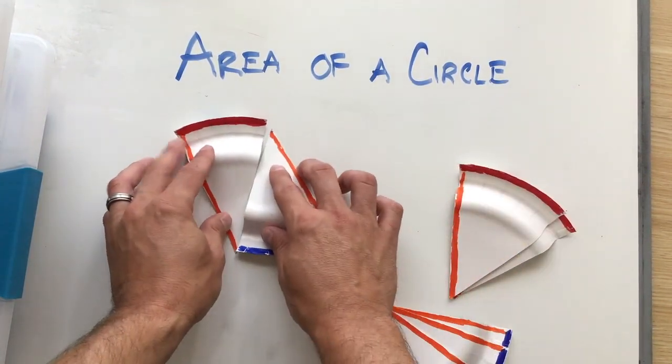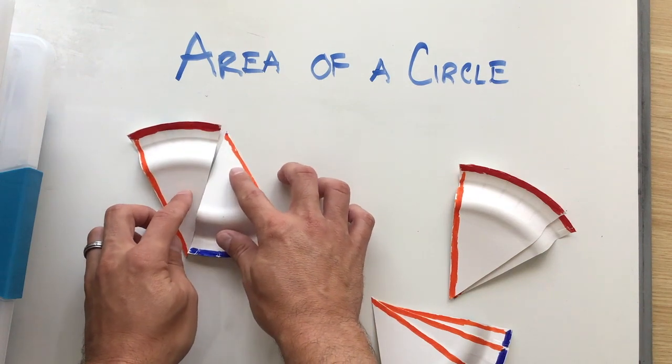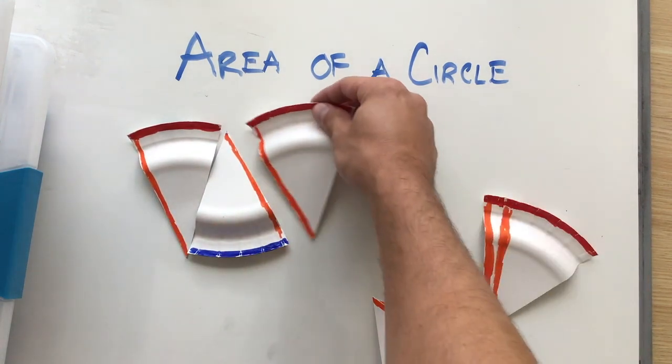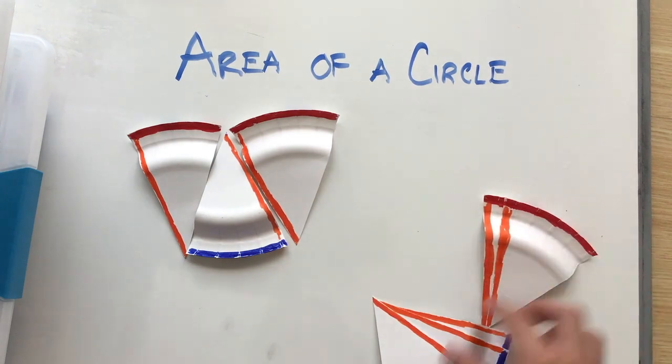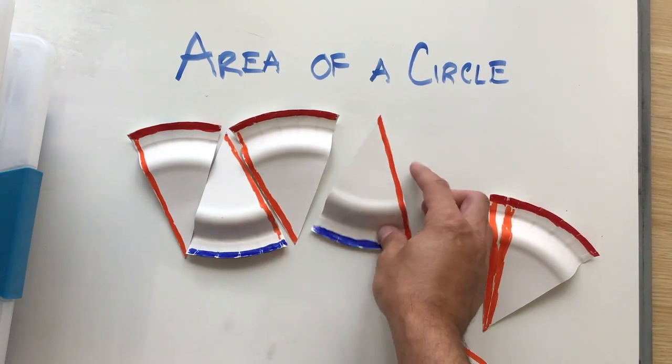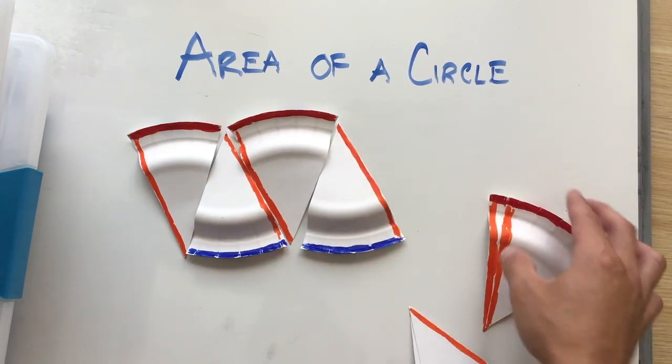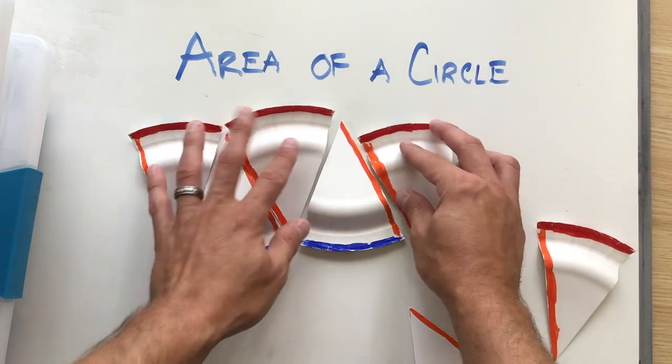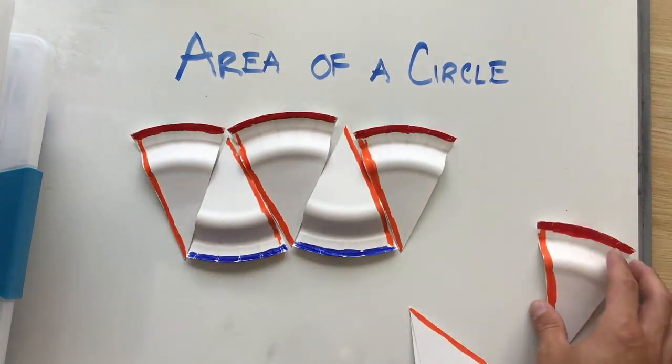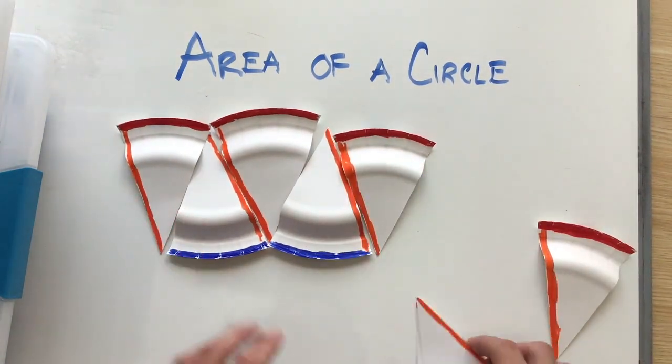And so I'm going to arrange my pieces with all my red edges on one side, and all my blue edges on another side. And the smaller I cut my strips, the more accurate this will be, but I'm just going to use eight strips right now.